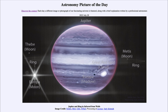Jupiter's rings were not discovered until we traveled out beyond Jupiter and looked back to see them lit from behind, and we were then able to detect this very thin, faint ring.